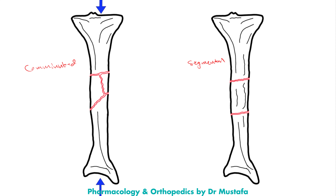In the comminuted fracture we have multiple lines — here we can count three fracture lines, giving us four fragments in total: first, second, third, and fourth. So in the comminuted fracture we have multiple lines and multiple fragments.